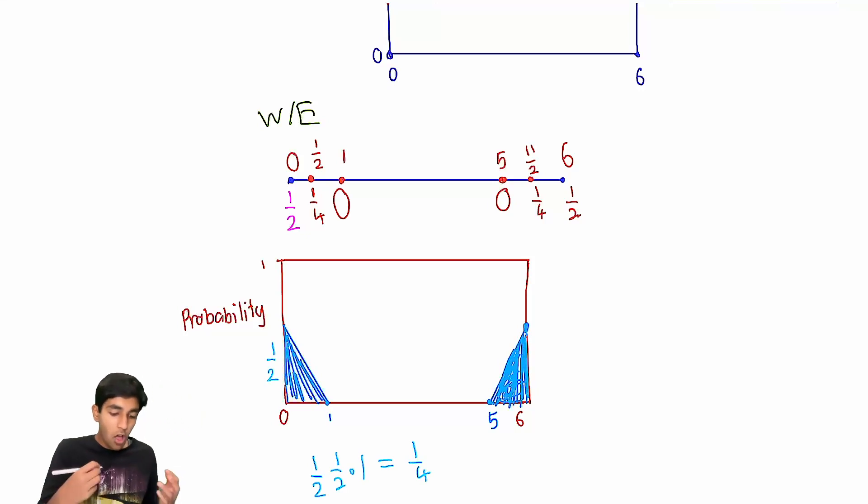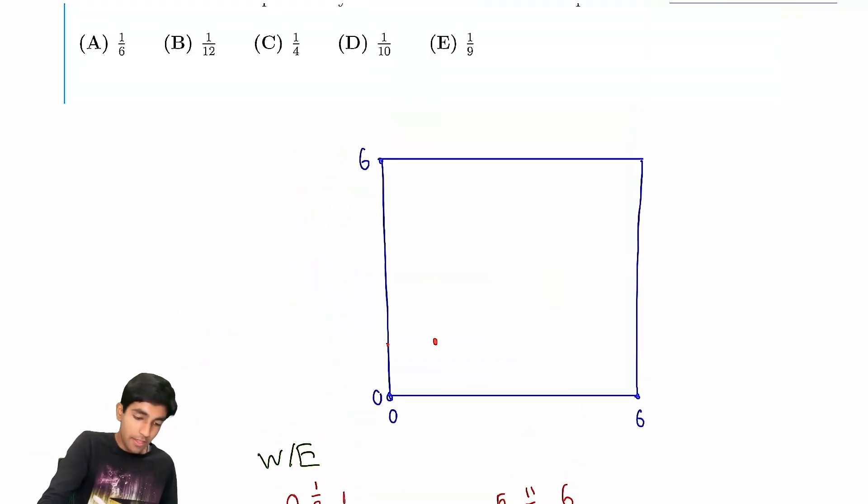Half times one times half is the area of one of the triangles. And there's two of them. So, all in all, the area of these two triangles is half. And then if you compress it into this rectangle, which has a base of six, it will have a height of one-twelfth. On average, the probability is just one-twelfth. And that is B.